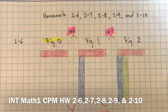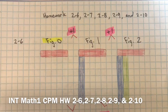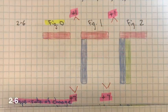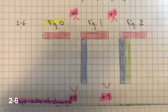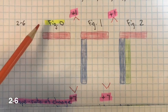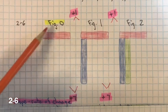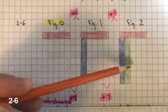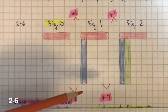This is the homework for 2-6, 2-7, 2-8, 2-9, and 2-10. Each new figure — write a linear equation that represents this pattern. Figure 0 has 5 tiles, and you're adding 7 tiles to each additional figure.